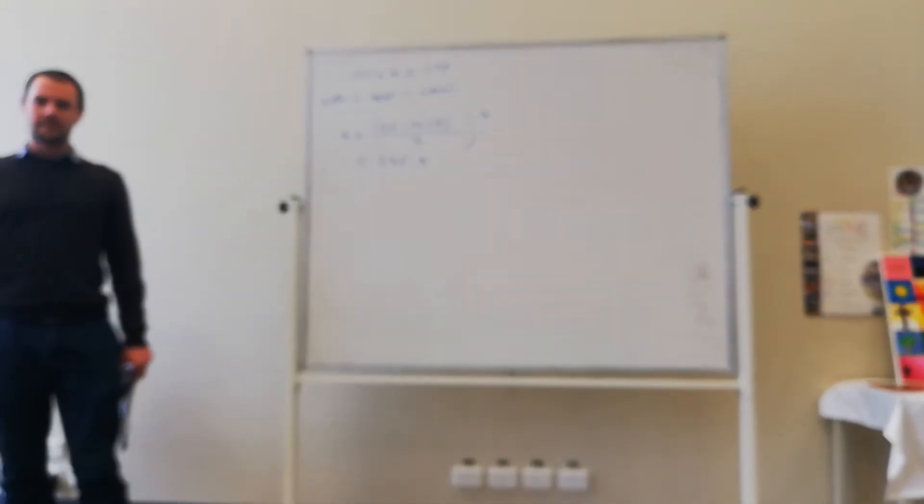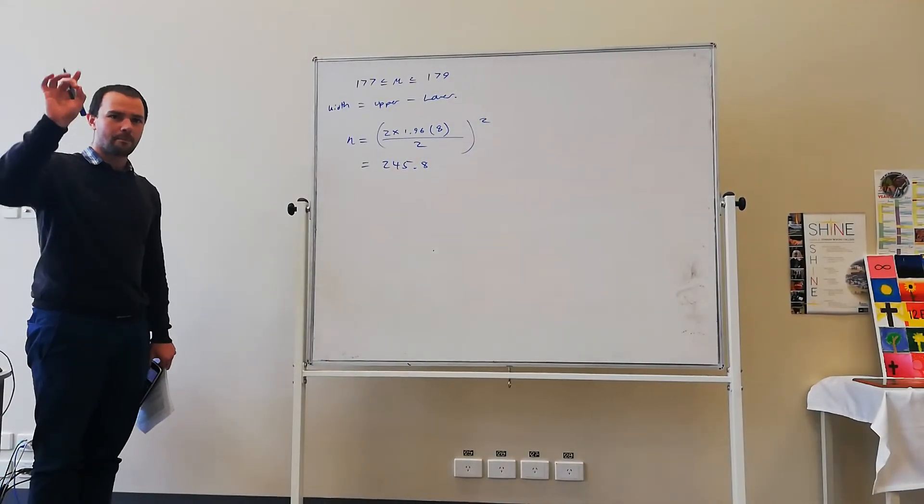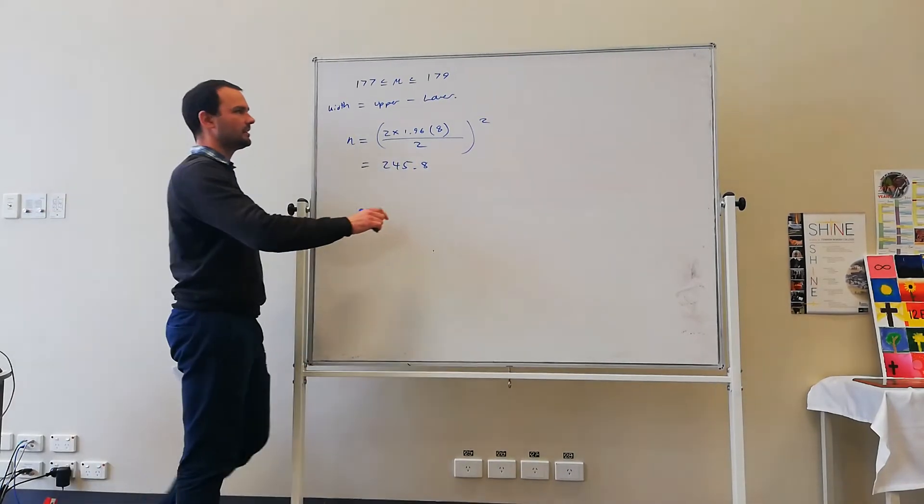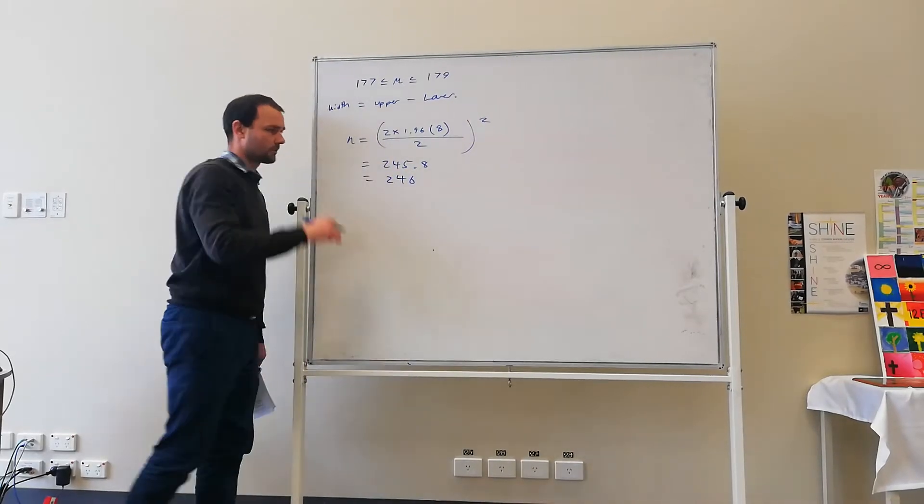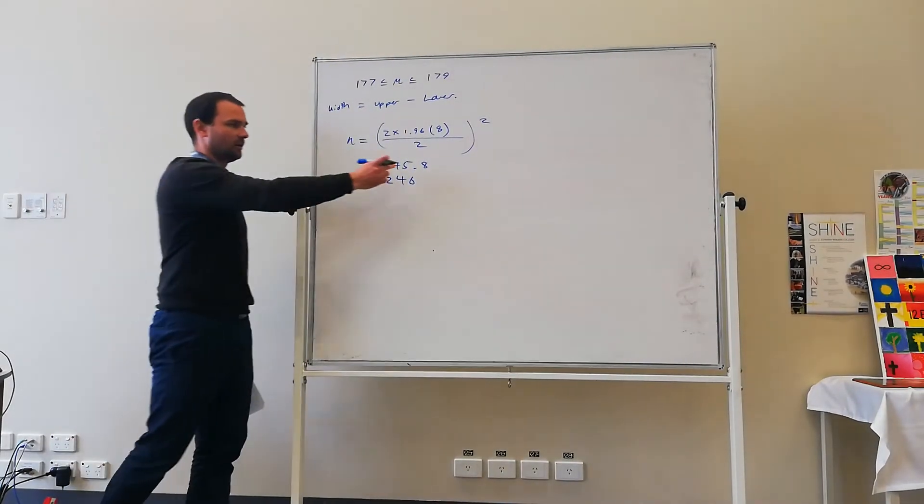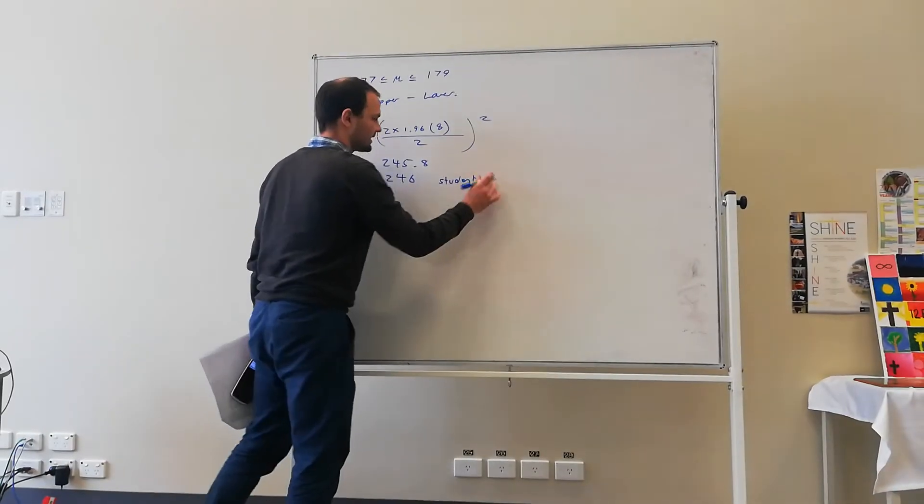Alright, regardless of what the decimal is, we're always going to round up to guarantee that width. Okay? So we always round up the number of samples, regardless of if it was below 0.5. So we need to sample 246 students in order to guarantee a width of 2cm.